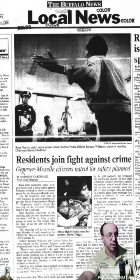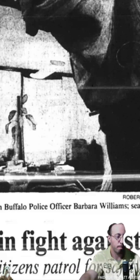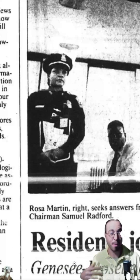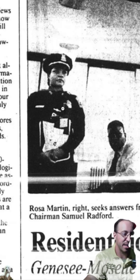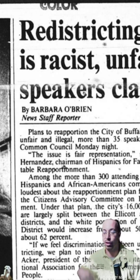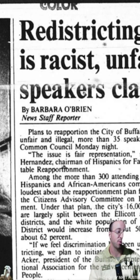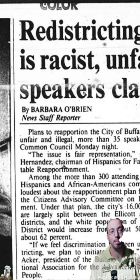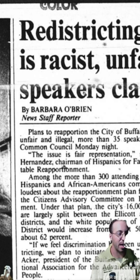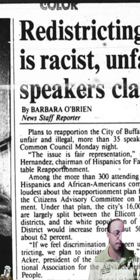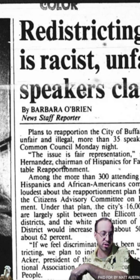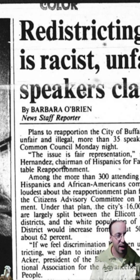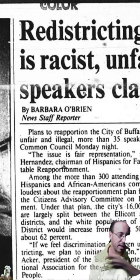On that same page from May 14th was an article about residents joining to fight against crime, and in that photo is Buffalo police officer Barbara Williams — who is now Barbara Miller Williams, the actual controller of the city. Here she is in 1991 as a police officer at the public hearing. The council held a public hearing on May 23rd where plans were called racist, unfair, and illegal. More than 35 speakers and 300 people attended, which contrasts with 2023 when the same hearing had just one person. Dave Fronzak was chair of this year's commission too, so the connection between the Fronzak gerrymandering in 1990 and 2023 shares that common thread.